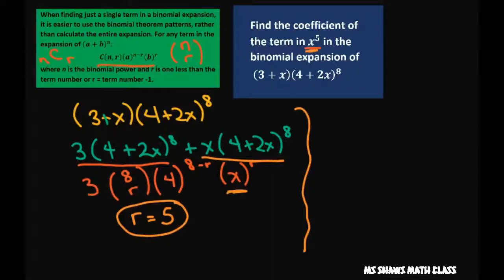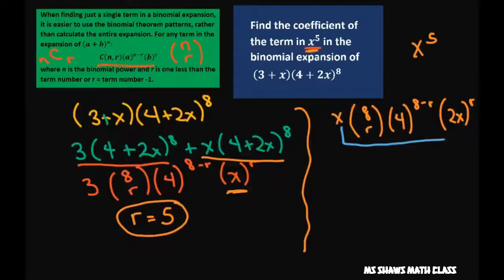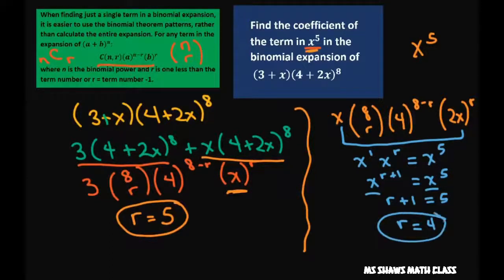And now let's look at this one. For this one we're going to do the same thing. We're going to go x times n choose r times 4 to the 8 minus r, and then we have 2x to the r. Now we still want x to the fifth. So what I'm going to do is just look at my x's. I have x to the first times x to the r, and we want this to be x to the fifth. So this is going to be x to the r plus 1 equals x to the fifth, or r plus 1 equals 5. Because our bases are the same, clearly r is 4 for this part of it.